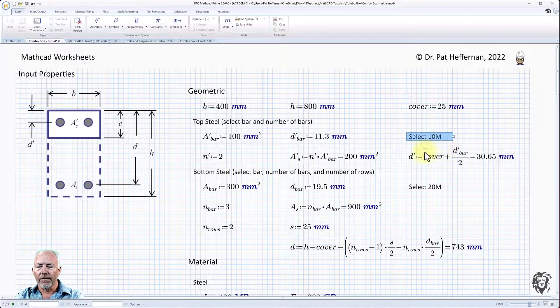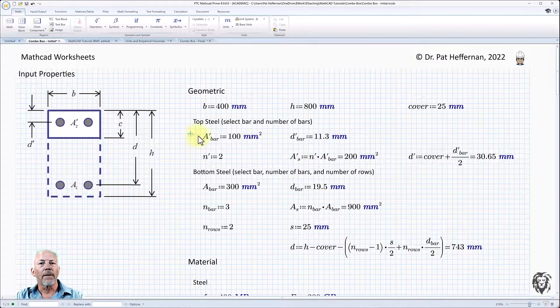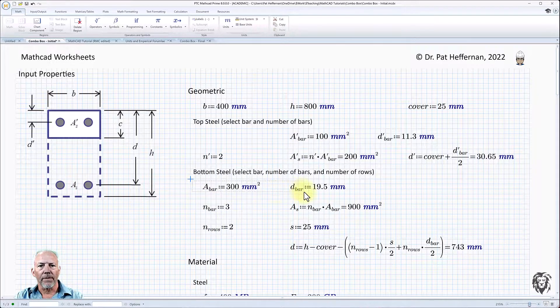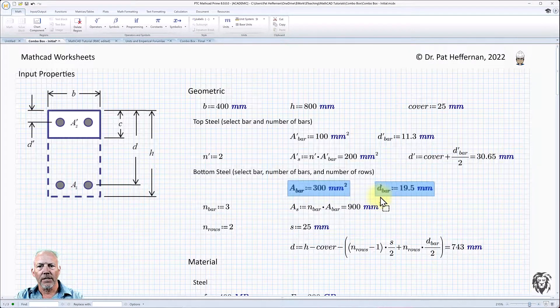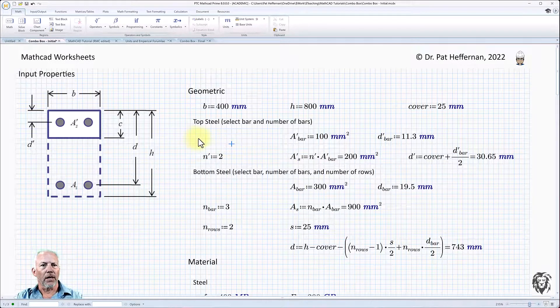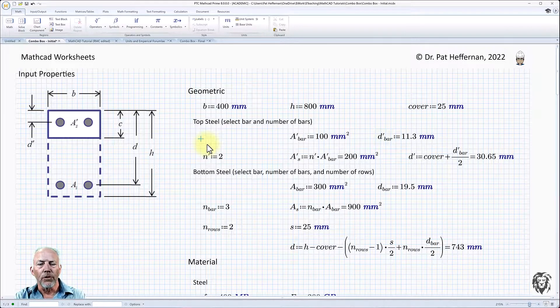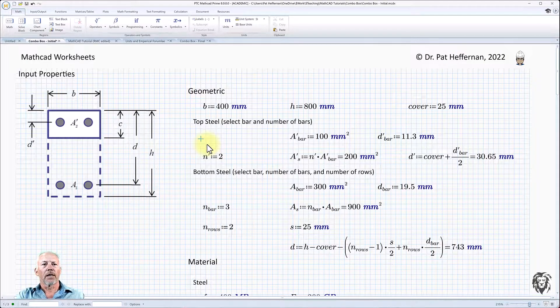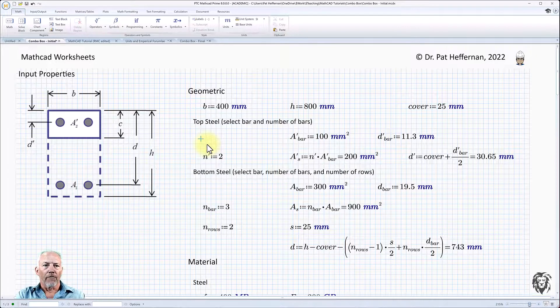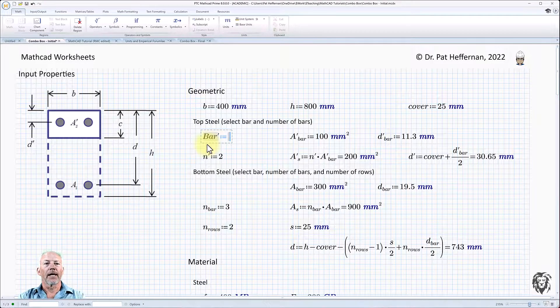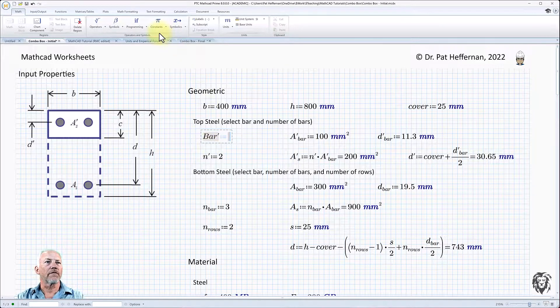So let me modify this sheet. I'm just going to get rid of some stuff, move some of this out of the way so I can make myself some space. What I want to do is introduce the combo box, which will read the information into a vector variable for the selected bar size. And so I'm going to call it bar prime because we're talking about the top steel bar and we're going to define it using the combo box.